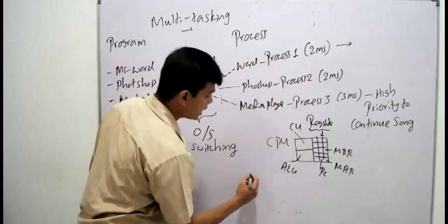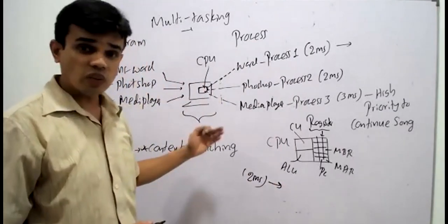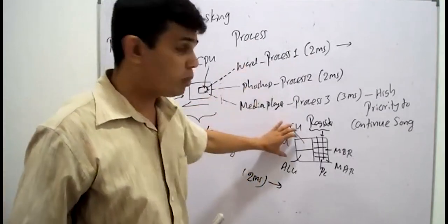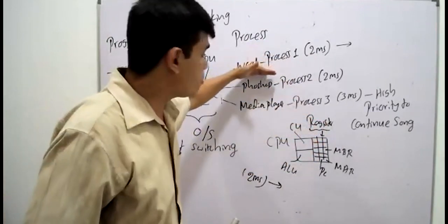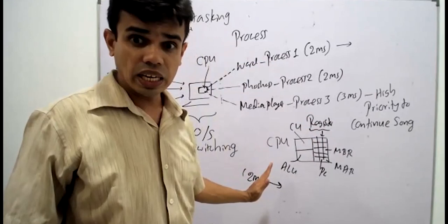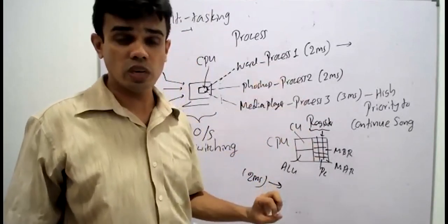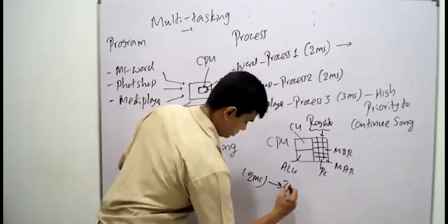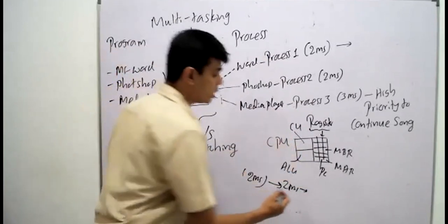After those two milliseconds, what will happen to the CPU? Will it keep the same details, or will the CPU areas be assigned the details of Photoshop? After these two milliseconds, we start the next two milliseconds for Photoshop — those Photoshop details will be assigned to the CPU. Then after that millisecond is gone, the next two or three milliseconds belong to Media Player.